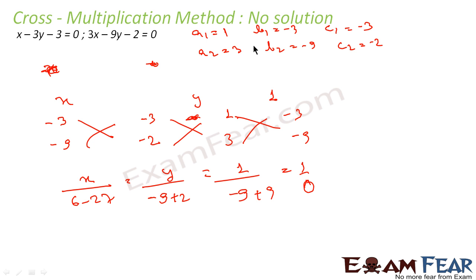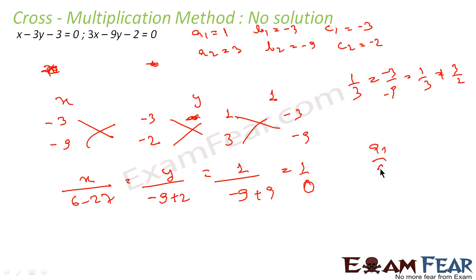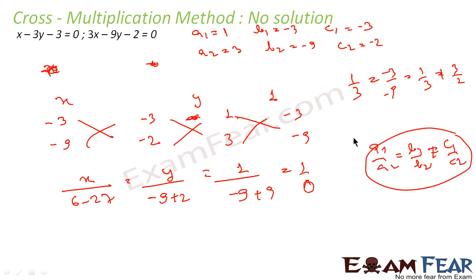We said that if a1·b2 = a2·b1, both are equal to −9, that means no solution. Let's verify: a1/a2 = 1/3; b1/b2 = −3/−9 = 1/3 — also equal to 1/3. But c1/c2 = −3/−2 = 3/2. So a1/a2 = b1/b2, but it is not equal to c1/c2. Since it is not equal to c1/c2, we say there is no solution. a1/a2 = b1/b2 but not equal to c1/c2 → no solution.